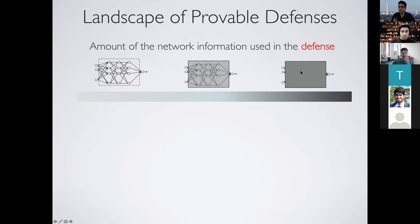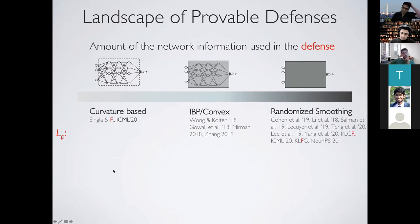As a rule of thumb: if you use mostly input-output relationships, your defense is more scalable. If you use high-order network information, your defense will be very good for smaller networks but may not scale to deeper networks. Against LP, there are three regimes: randomized smoothing (very scalable), interval bound propagation or convex relaxation-based defenses, and curvature-based defenses that use second-order curvature information to guarantee provable robustness.